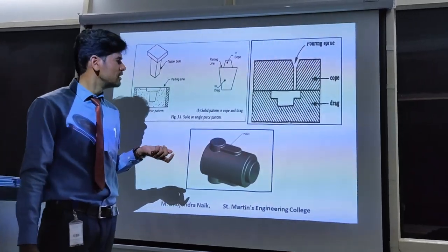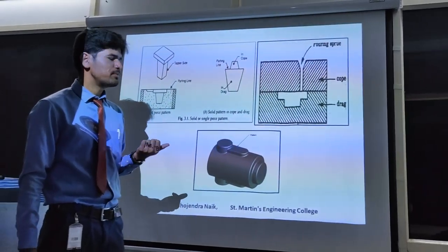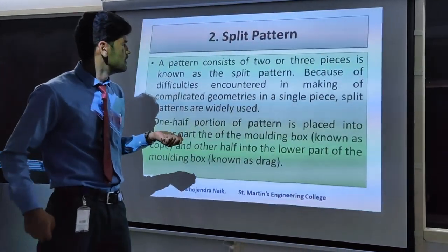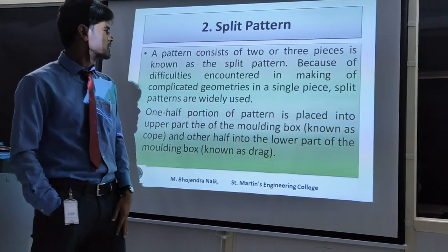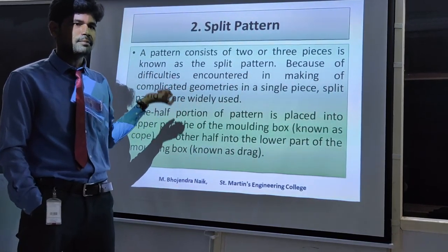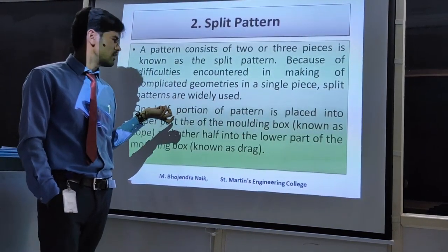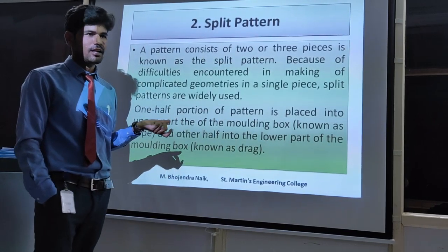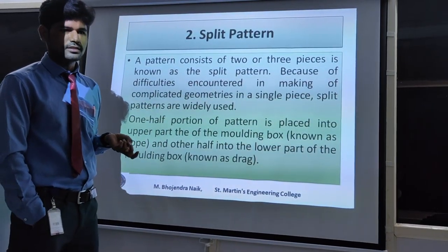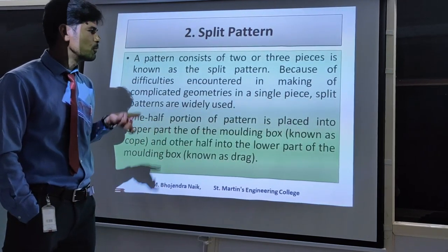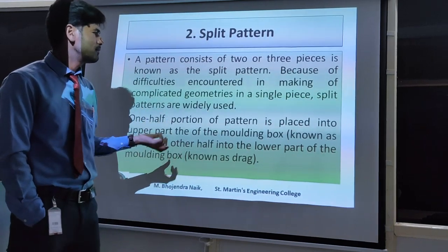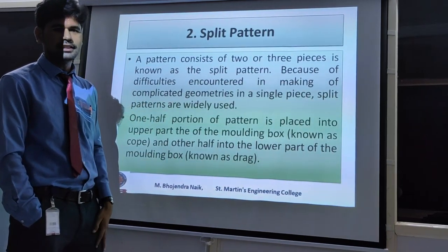If the object has some complexity, the single piece pattern is not suitable. At that time, you can go for the split piece pattern, also called a two-piece pattern. The pattern consists of two pieces, three pieces, or multi-piece patterns. For a two-piece pattern, you require cope and drag boxes. If the pattern has more than two pieces, that pattern is called a multi-piece pattern, and you require an additional box called a cheek box.